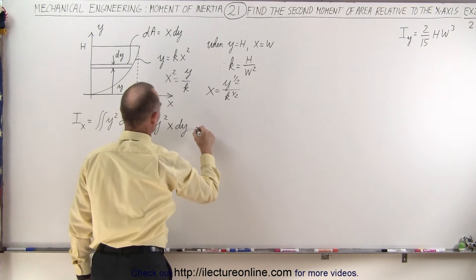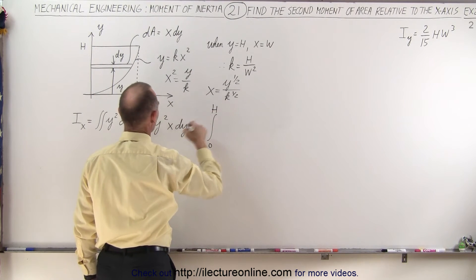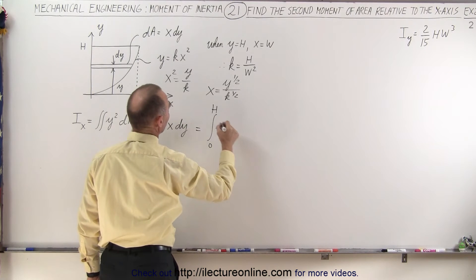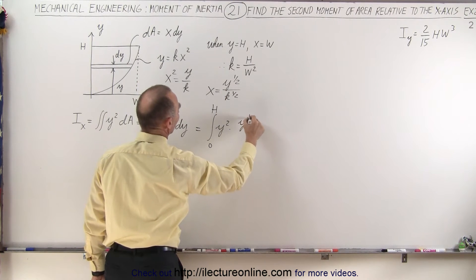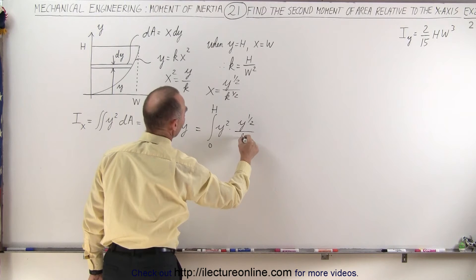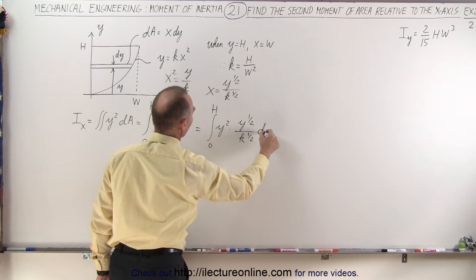And this becomes equal to the integral from 0 to h of y squared times y to the one-half power divided by k to the one-half power times dy.